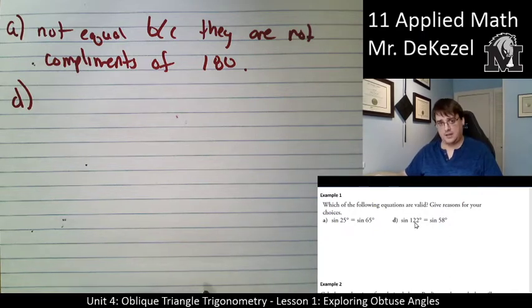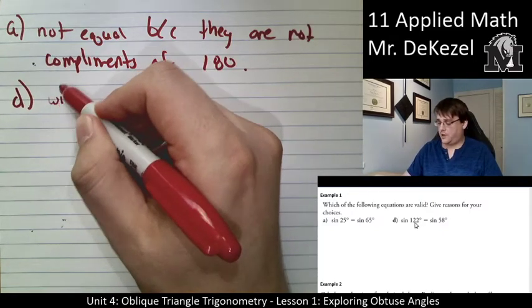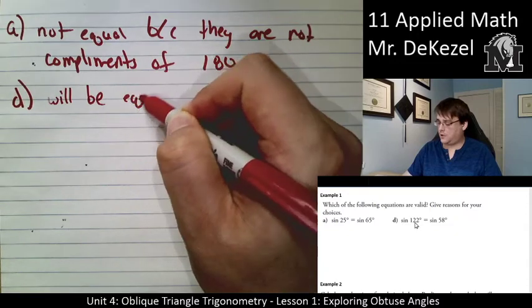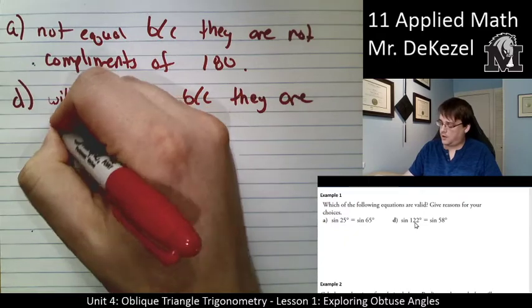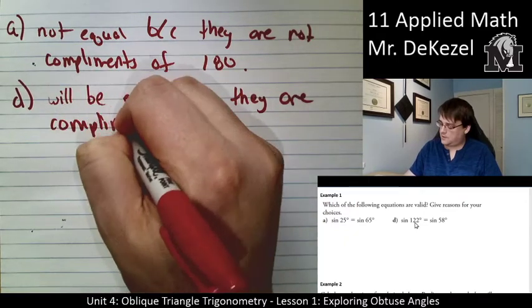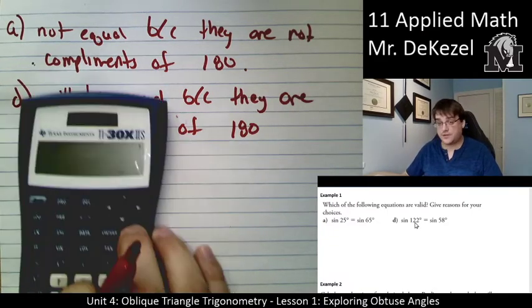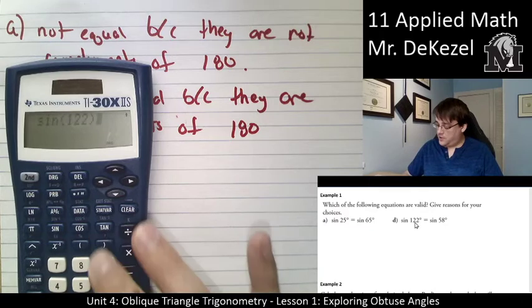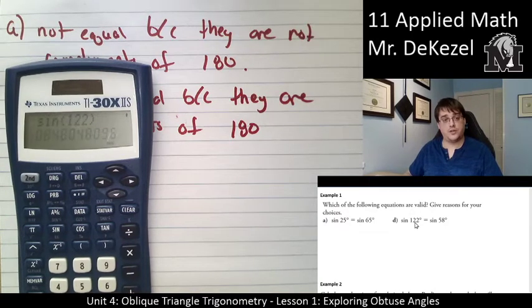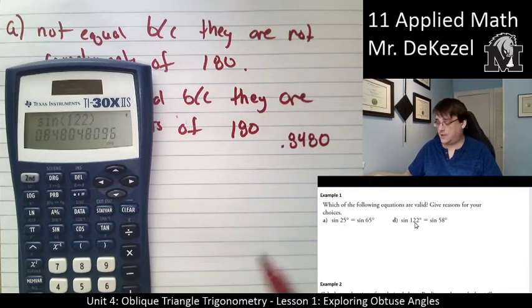Let's check out D, which is right beside it. We have sine of 122 and sine of 58. Those are complements of 180. So I would say that those will be equal, will be equal because they are complements of 180. And let's find out. Let's do that here.